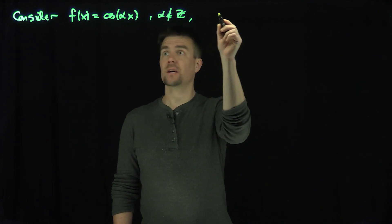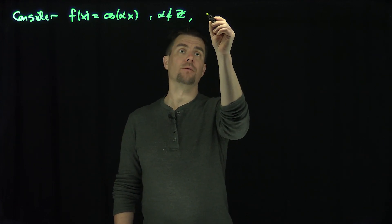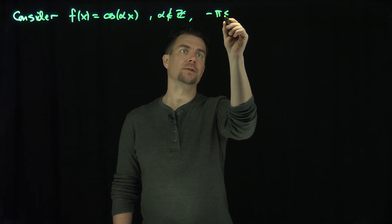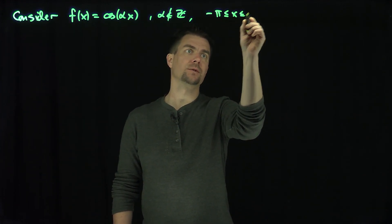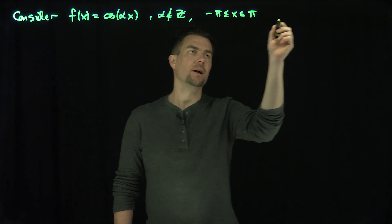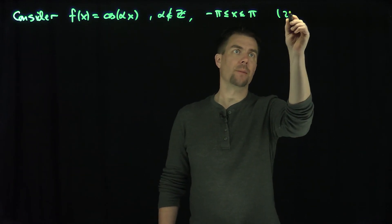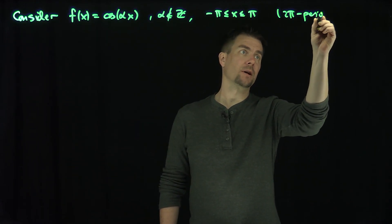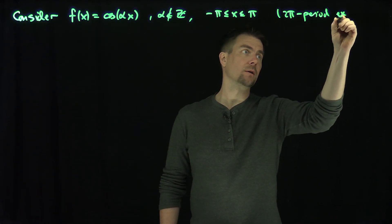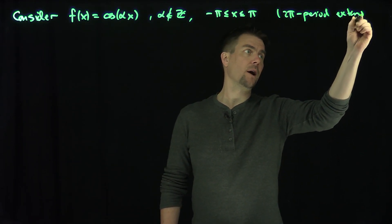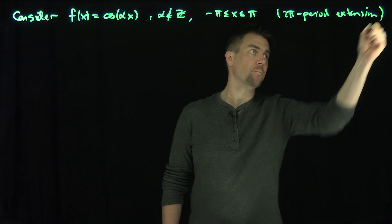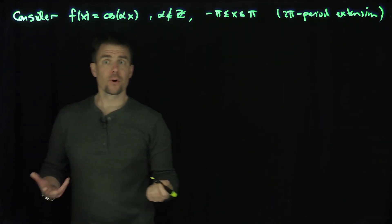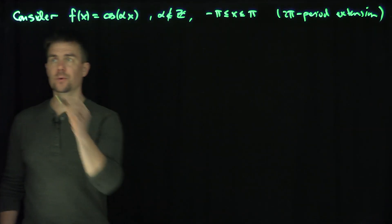For x between negative pi and pi — negative pi less than or equal to x less than or equal to pi — and extend this to be 2π-periodic, which it clearly is going to be a 2π-periodic extension. Let's find the Fourier coefficients of this function.